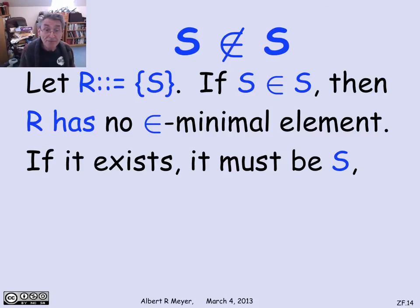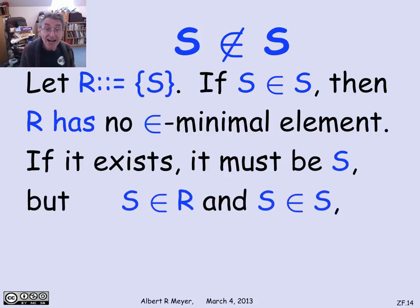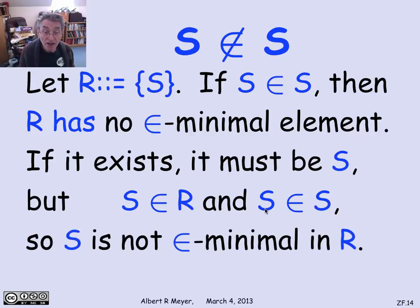But s can't be membership minimal because s is in r, which means s has an element in r. So s is not r-minimal, and the foundation axiom immediately implies you can't have s be a member of s. This argument extends to member of a member and so on.